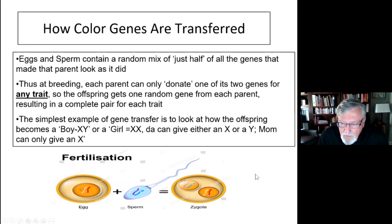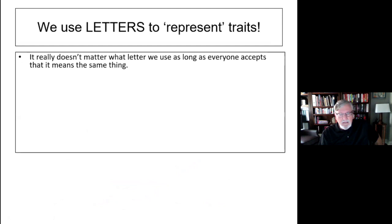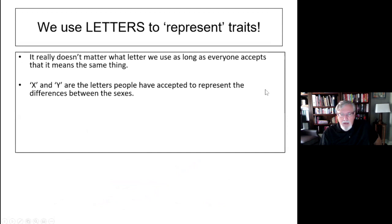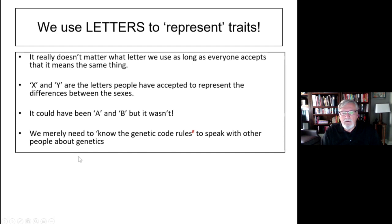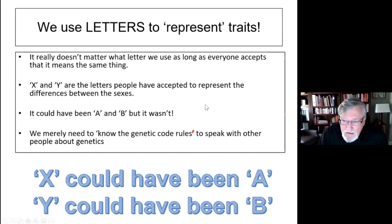We use letters to represent these traits. It really doesn't matter what letter we use as long as everybody accepts it means the same thing. As far as the sex of the rabbit goes, X and Y are the letters we humans have accepted to represent the difference between the sexes. We merely need to know the genetic code rules to speak with each other about genetics — X could have been A and Y could have been B, but they aren't.